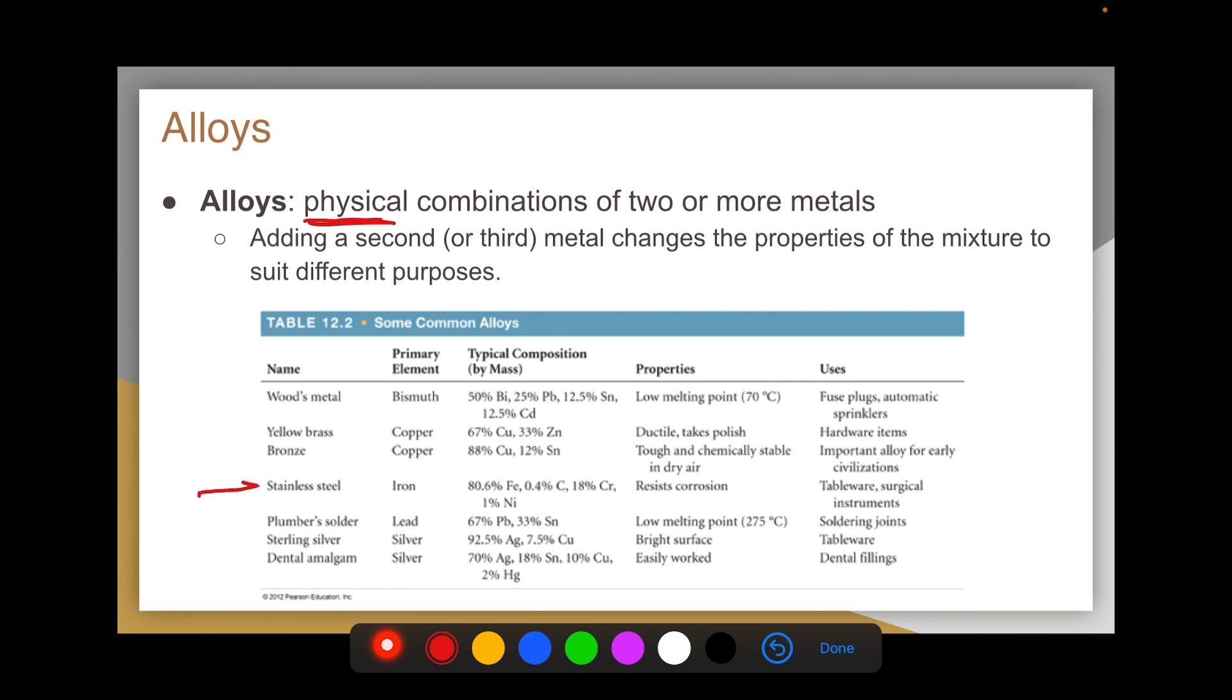So take, for instance, stainless steel, which you're probably familiar with if you do any cooking. Stainless steel is a really common material used in cooking implements, like pots and pans, sometimes countertops. Stainless steel is primarily made of iron.